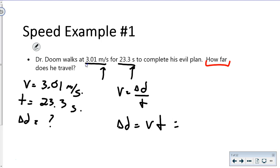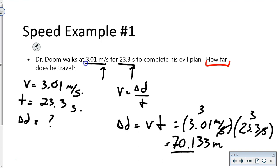Everything's in the same units, so no conversions needed. 3.01 meters per second times 23.3 seconds—seconds cancel—gives us 70.133 meters. Taking significant digits into account, we have three in both values, so three in our answer: 70.1 meters.